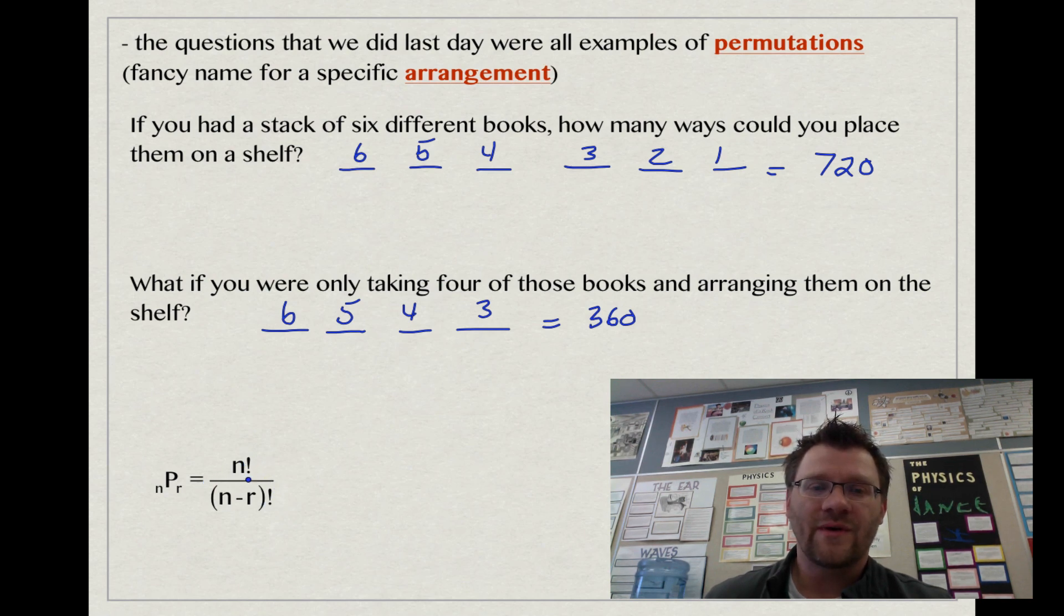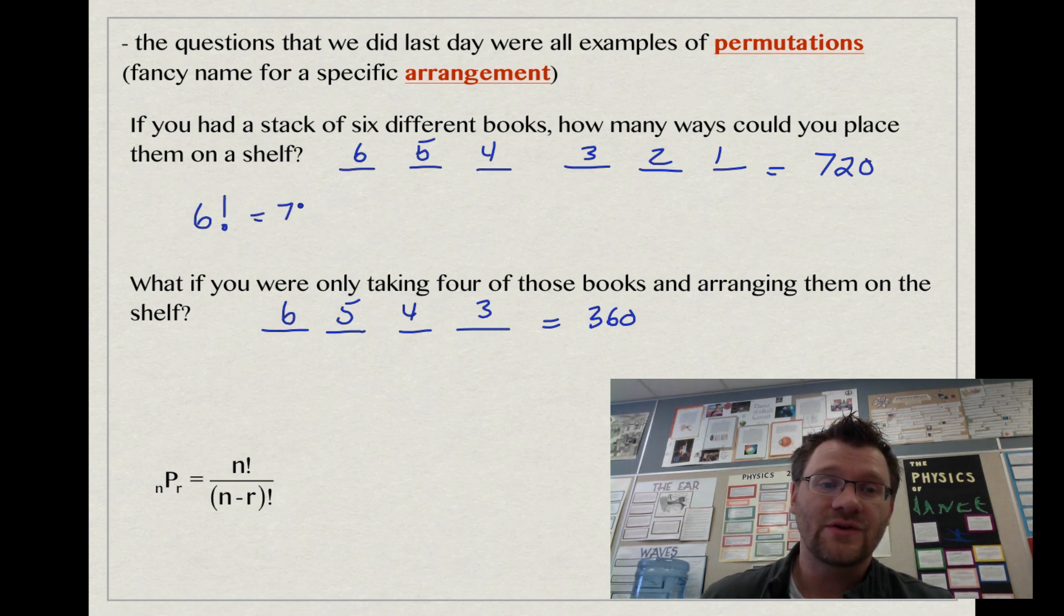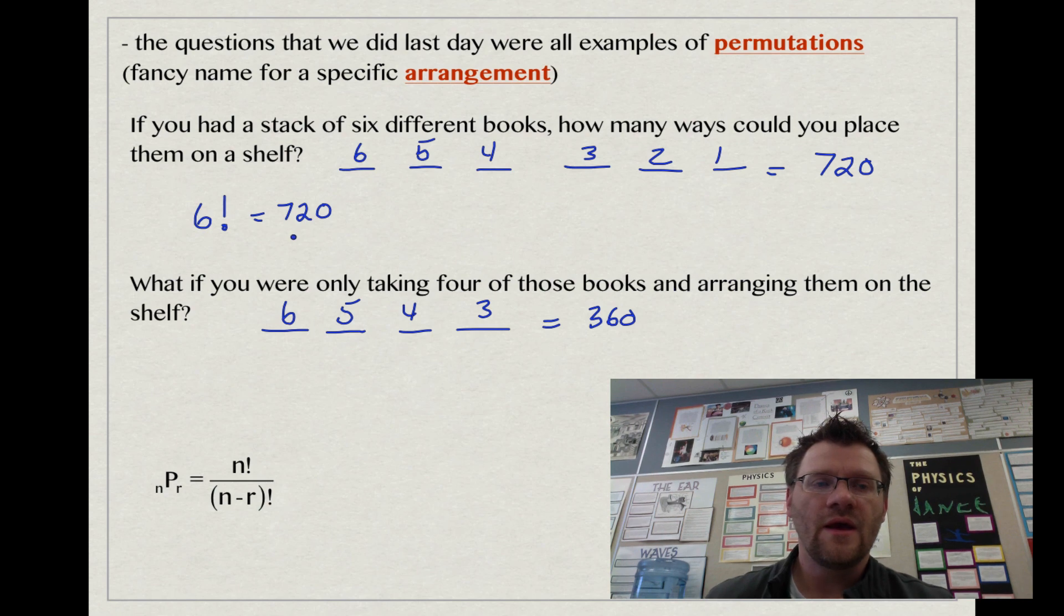What does this factorial mean? We actually just did factorial in the first part of this example. If we're saying six factorial, that's just taking six and multiplying by one less than that number all the way down to one. Six factorial equals 720. Factorial is just multiplying by the number and then decreasing that number by one each time and multiplying all those numbers together.